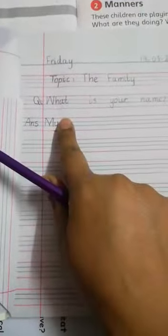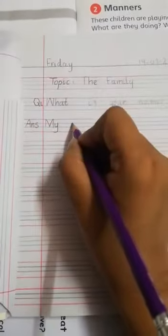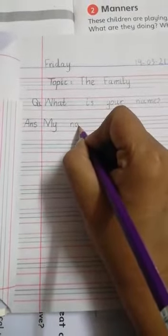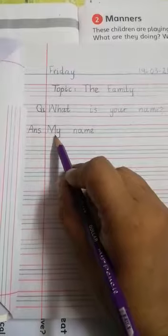One finger space and then you will write down 'name'. You can see the spelling of name from the question. My name is.